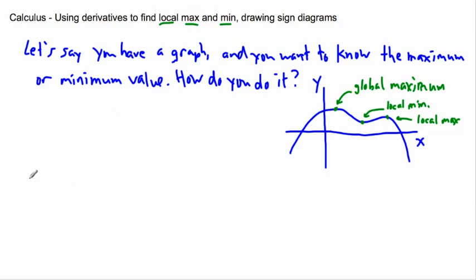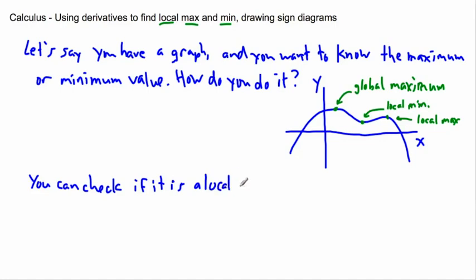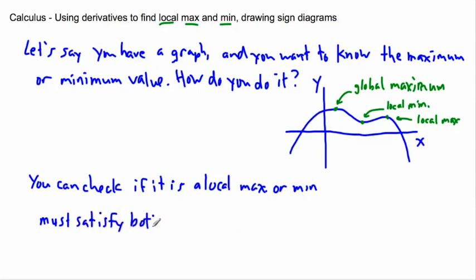So what do we do in general? You can check if it is a local max or min. It must satisfy both of these criteria. The first one is that f prime of x must equal zero.